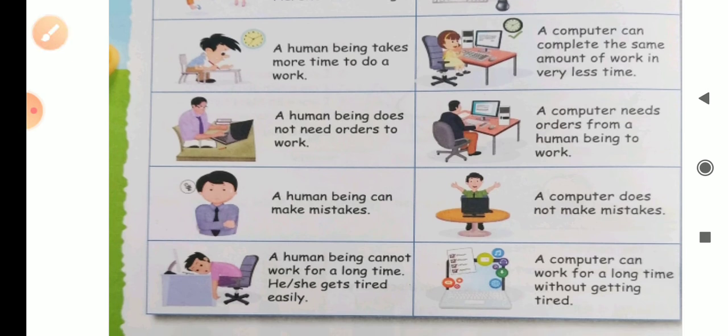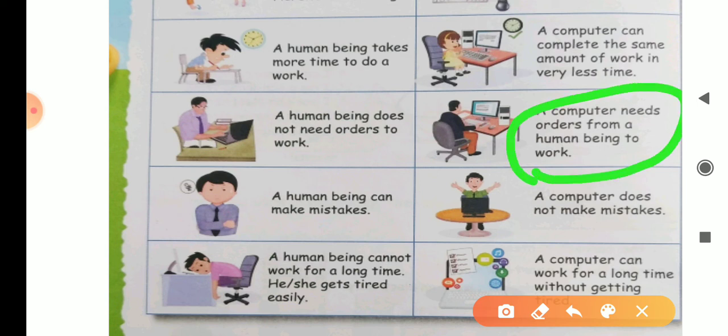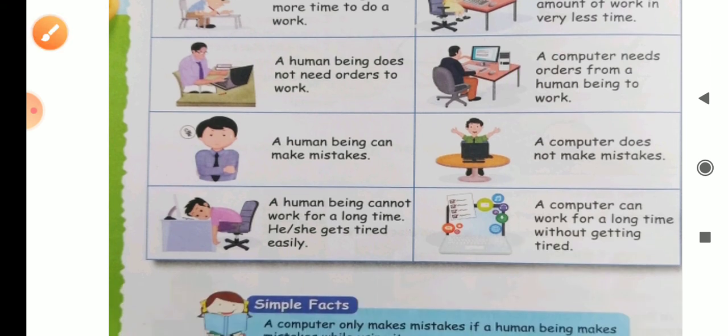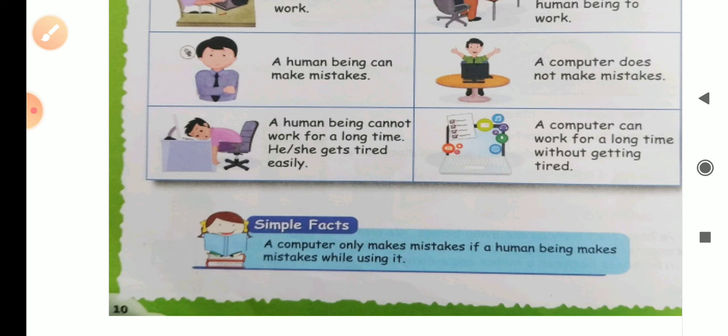A human being does not need orders to work. But a computer needs orders from a human being to work. You have to give the computer instructions for the computer to work. And next is, a human being can make mistakes. When you do addition, lengthy calculation, many times mistakes also happen. But a computer doesn't make mistakes.